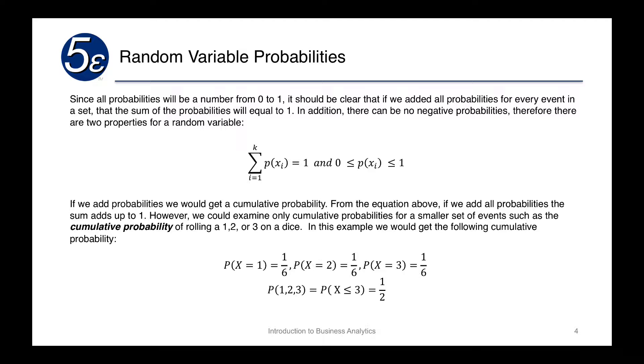If we add all the probabilities, we would get what's called a cumulative probability. From the equation above, if we add all of the probabilities, we get a cumulative probability of 1. However, we can examine only cumulative probabilities for a smaller set of events, such as the cumulative probability of rolling a 1, 2, or 3 on a dice. In this example, we would get the following cumulative probability: the probability of x equal to 1 is 1 sixth, of x equal to 2 is 1 sixth, of x equal to 3 is 1 sixth.